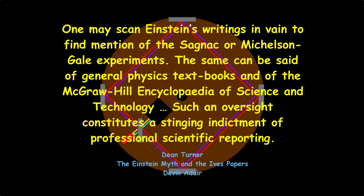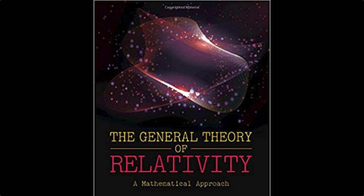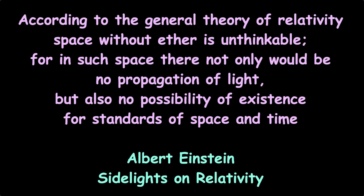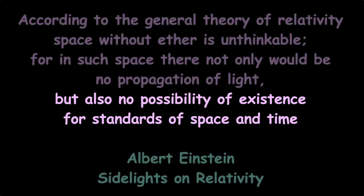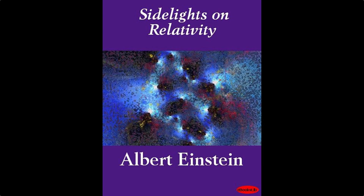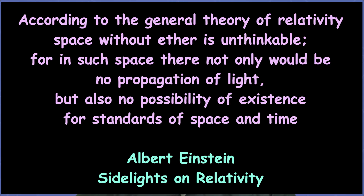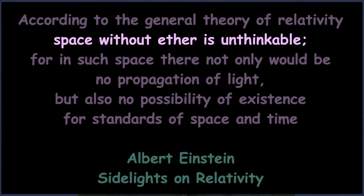Later, in 1915, he brought out a theory which he called the General Theory of Relativity. In a series of lectures at Leiden, he admitted that the theory demands an aether, and he said that without an aether there would be no possibility of existence for standards of space and time. In lectures in Japan he also pointed out the need for the aether. He wrote a book, Sidelights on Relativity, in which he said that general relativity is unthinkable without the aether.